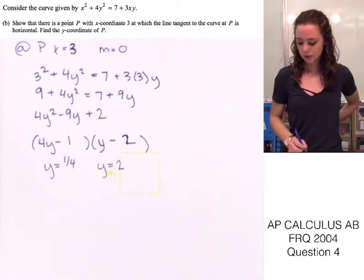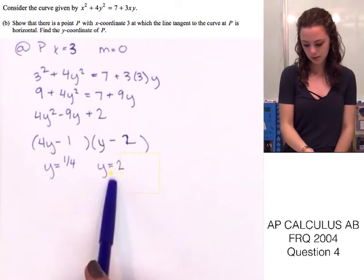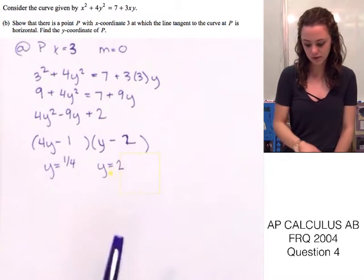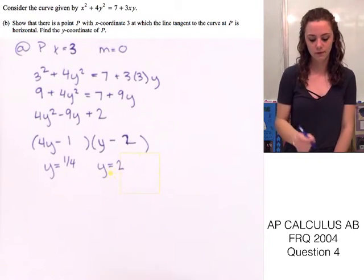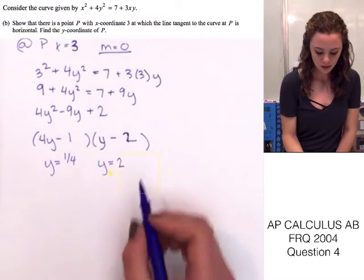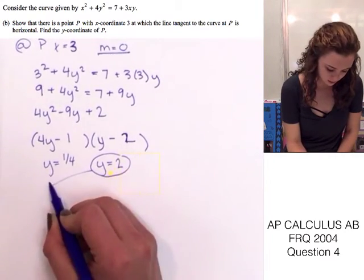Now that we've found the two y values, we need to plug these back into the derivative function to see if they actually do equal 0 for the slope, which we have here. So, we're going to go ahead and plug this one in and we'll do that right here.